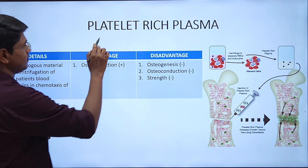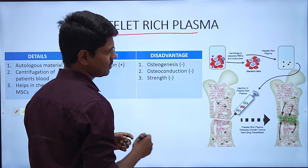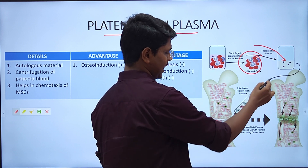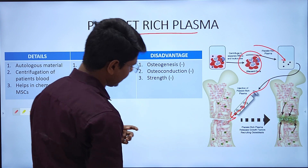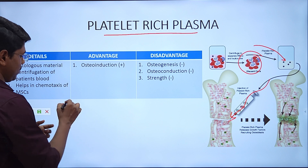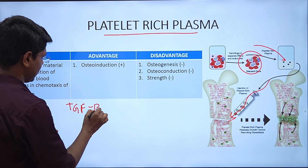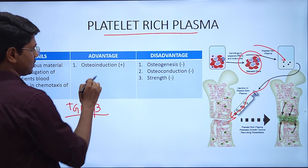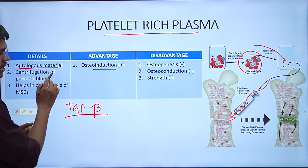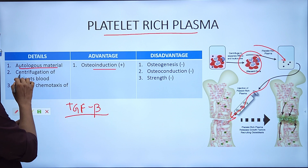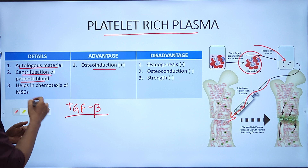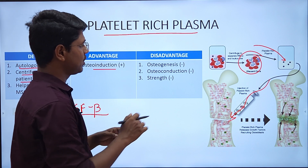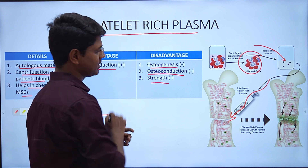Next is platelet-rich plasma (PRP). It is obtained by centrifugation — discard the RBC and WBC and the rest is platelet-rich plasma. It can be injected or applied to the fracture site. It acts as a source of TGF (transforming growth factor), so it will have chemotaxis of mesenchymal stem cells — simply osteoinduction property. It is autologous material obtained from the same animal. It does not have osteogenesis, osteoconduction, or strength.